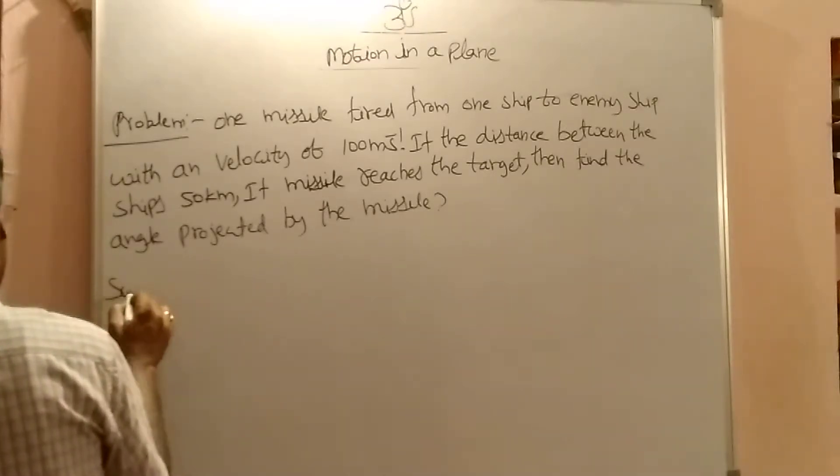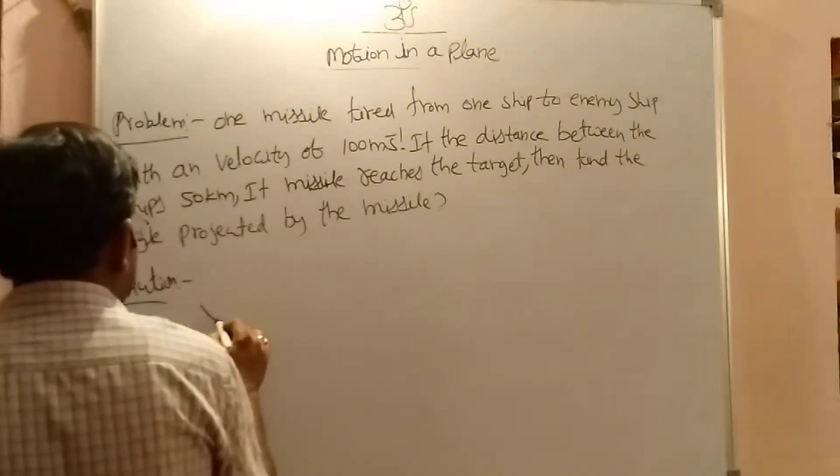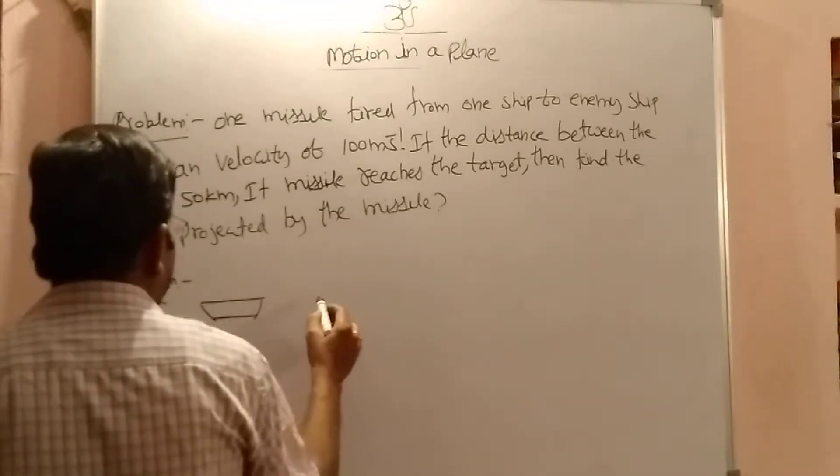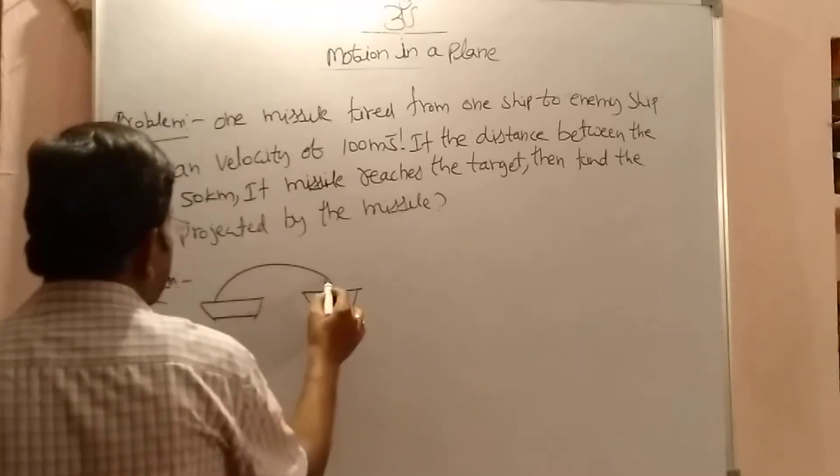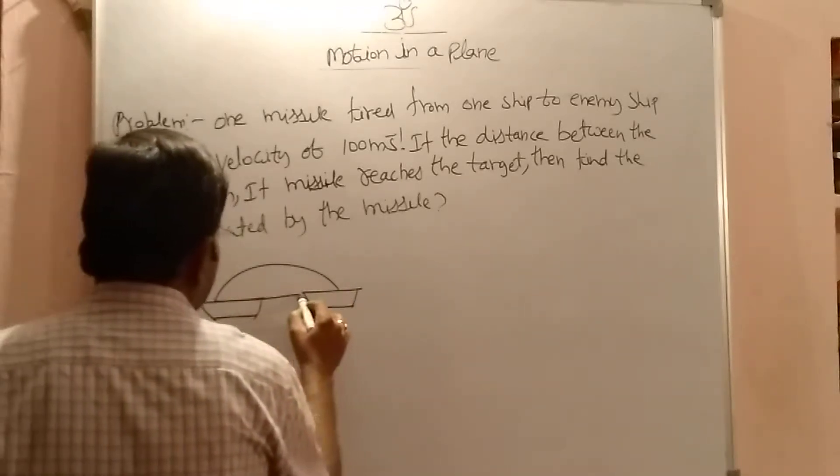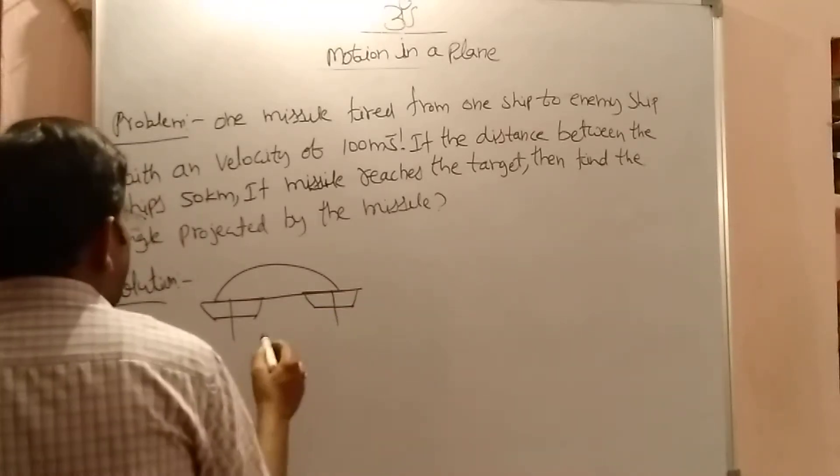So in this question, this is one ship and this is another ship. From here to here one missile going like this. So here, distance between the ships are given. That is 50 km.